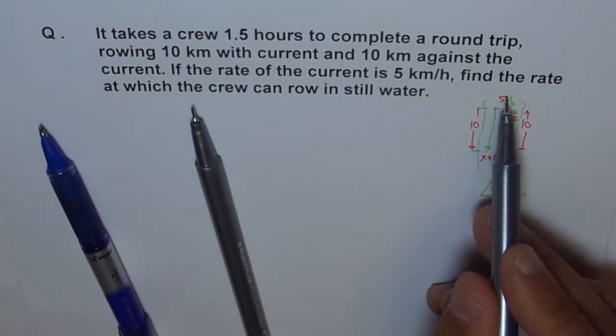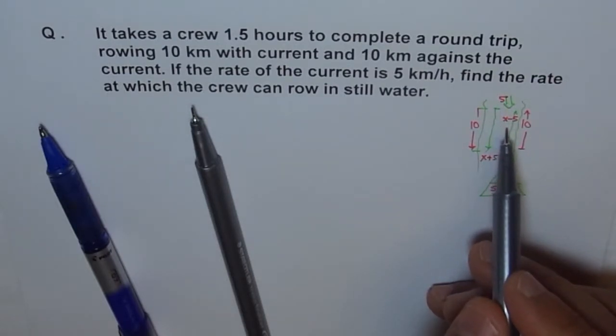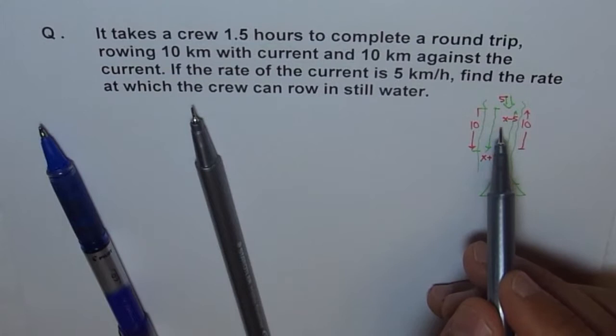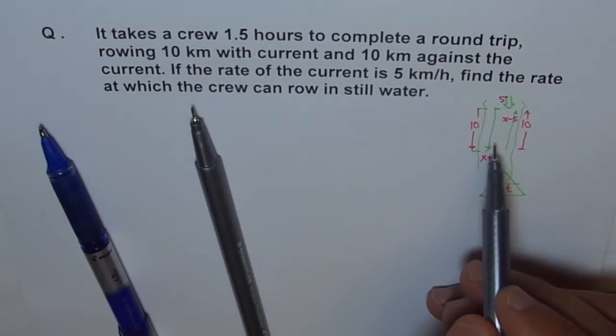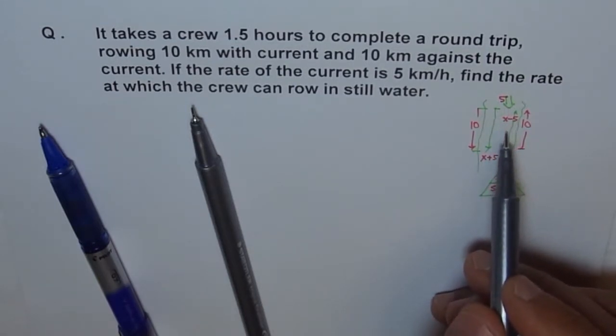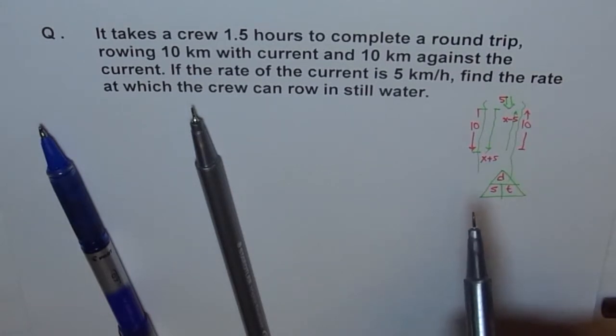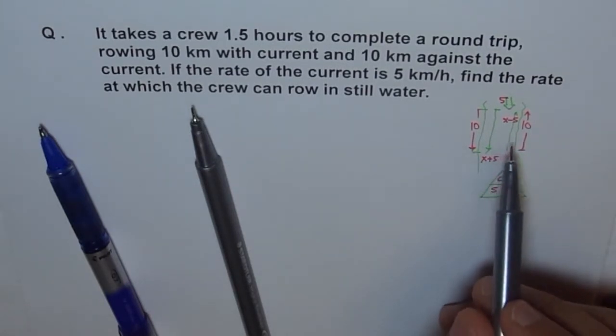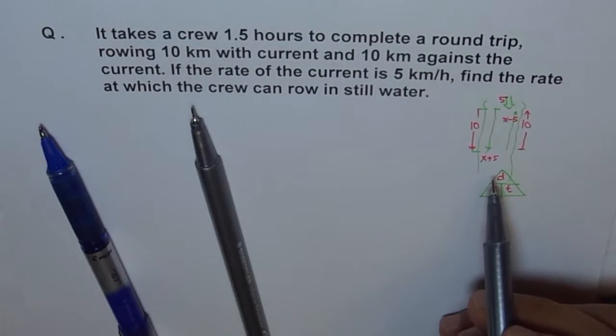And when you go against the net speed, I should use the term net speed. When you go against the current of the water, you go much slower, right? Because the water is against you. So, therefore, your speed is still water speed minus the current speed. The current of the water. So, it is X minus 5 when you go against the current.